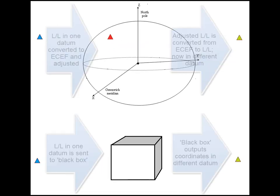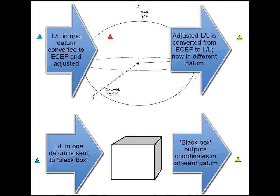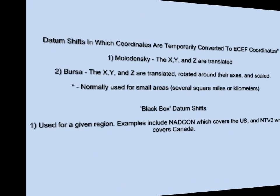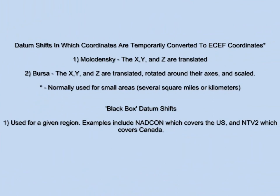Generally speaking, there are two datum shift methods. One relies on first converting geographic coordinates to another system called ECEF or Earth-Centered Earth-Fixed coordinates. These ECEF coordinates are adjusted and converted back to latitude and longitude. The second method is interpolative in nature. Given specific coordinates, a particular set of datum shift values are applied. Datum shifts in which coordinates are temporarily converted to ECEF coordinates are normally used for small areas. These include the Molodenski datum shift, in which the X, Y, and Z are translated, and the Bursa-Wolf datum shift, which includes rotating the X, Y, and Z around their axis.